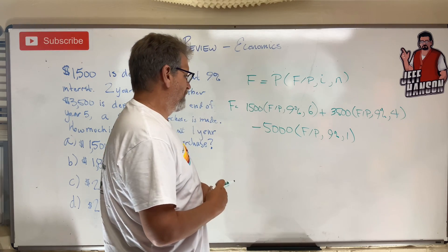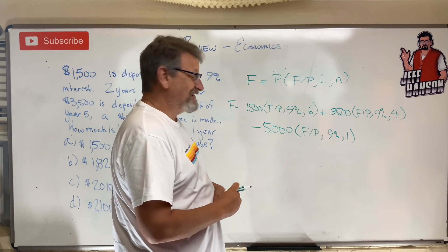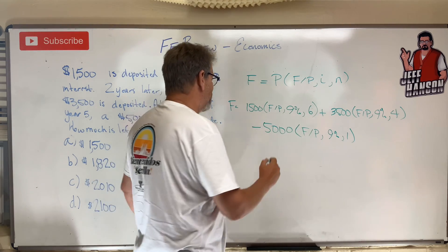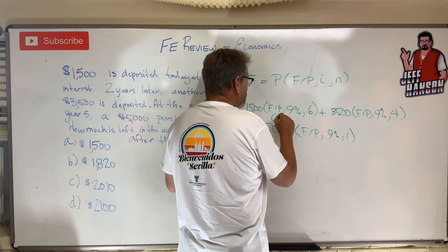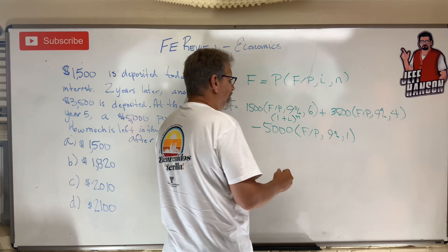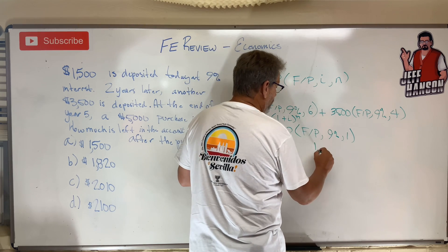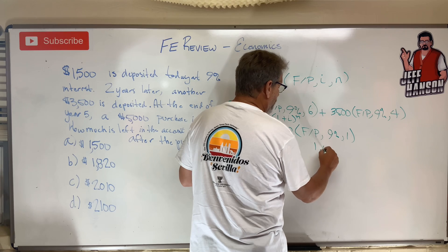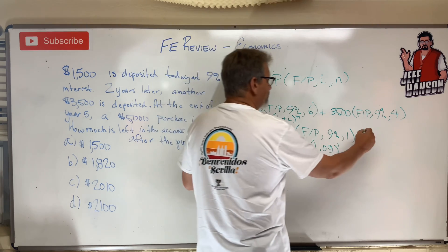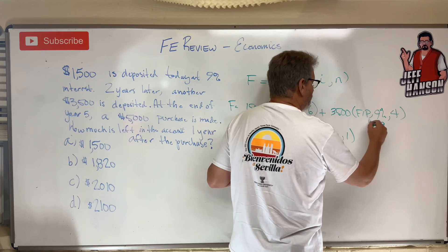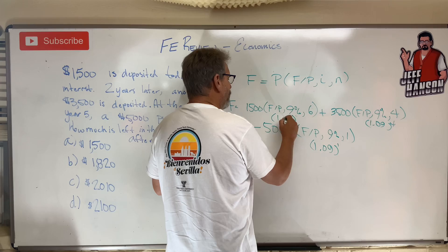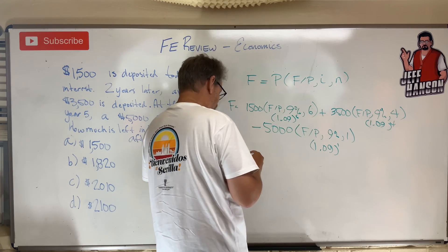That should give me my number. Now, 9% is not in the back of the book, so I'm going to use the equations. The equation for F given P is (1 + I) to the N. So the $5,000 term uses 1.09 to the first power, the $3,500 term uses 1.09 to the fourth, and the $1,500 term uses 1.09 to the sixth.